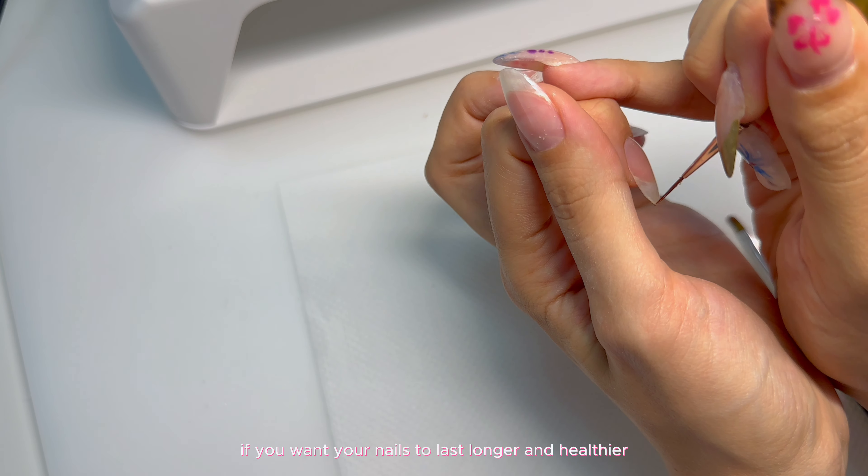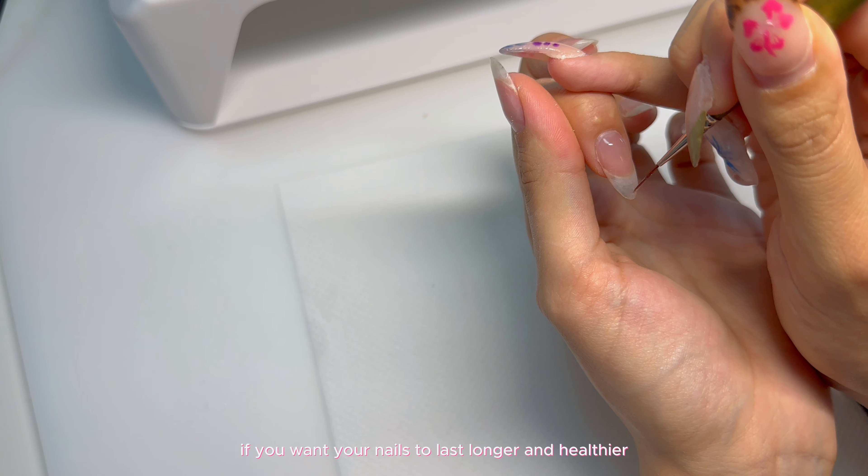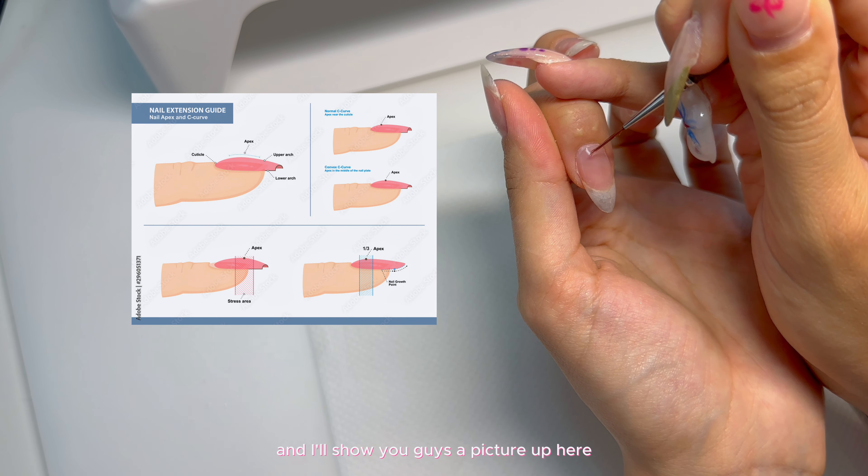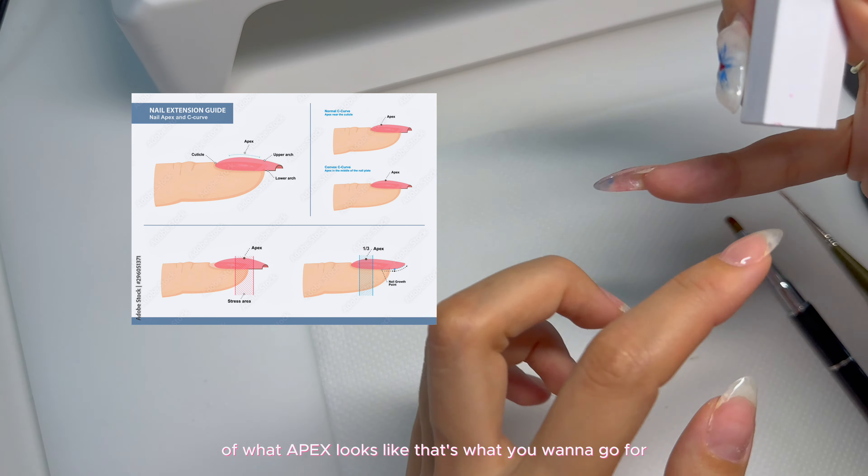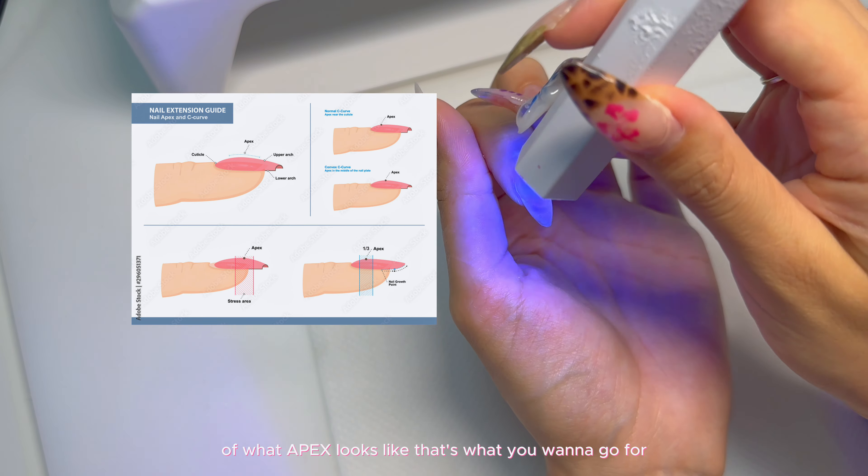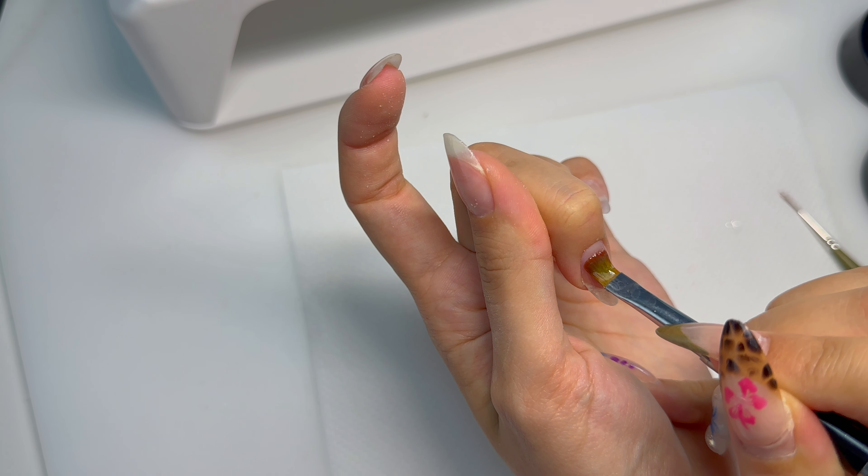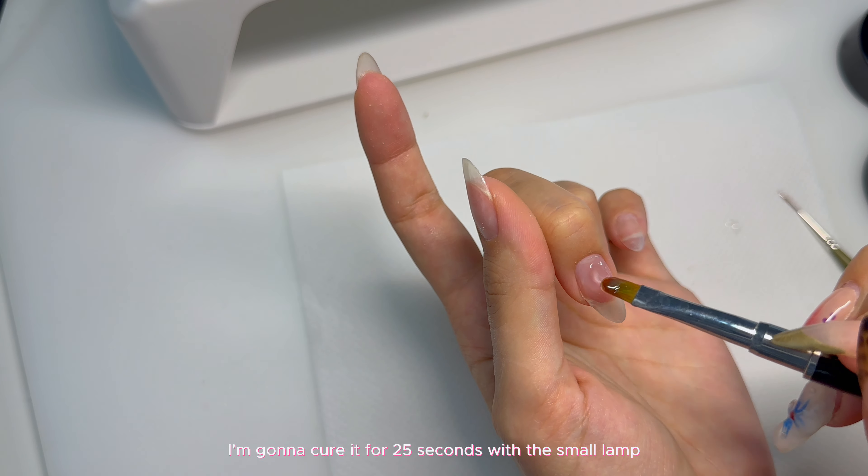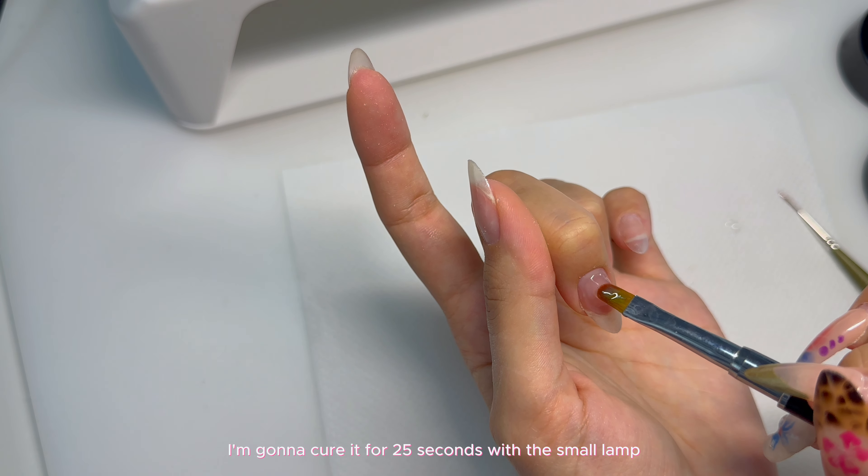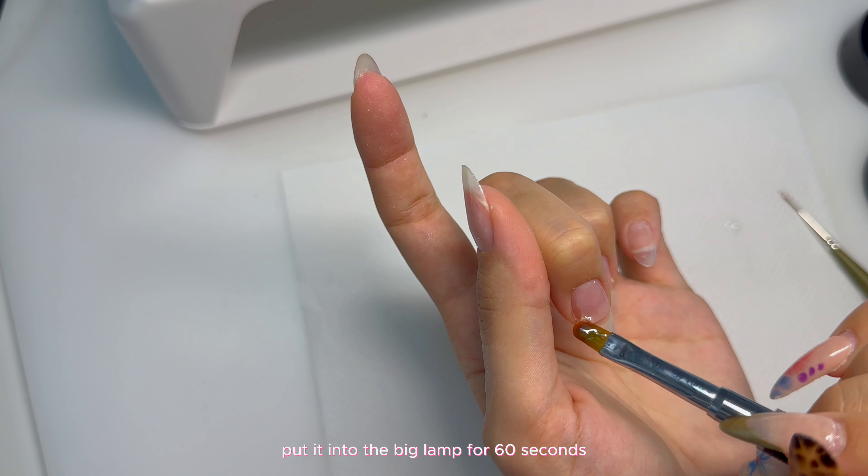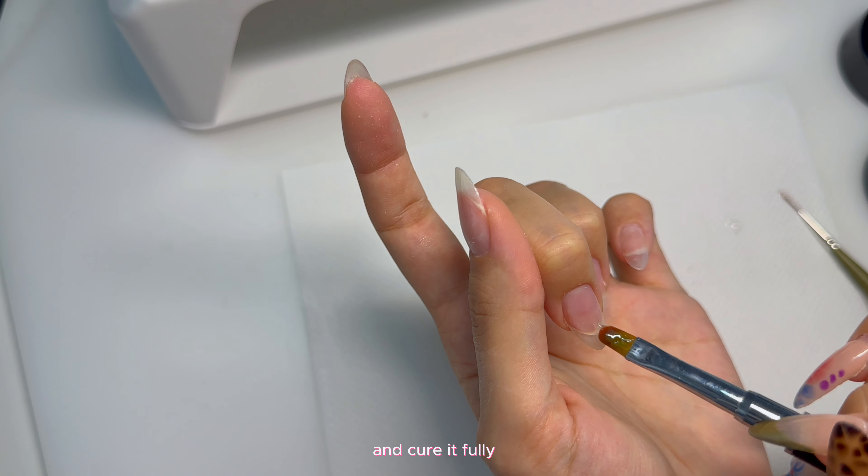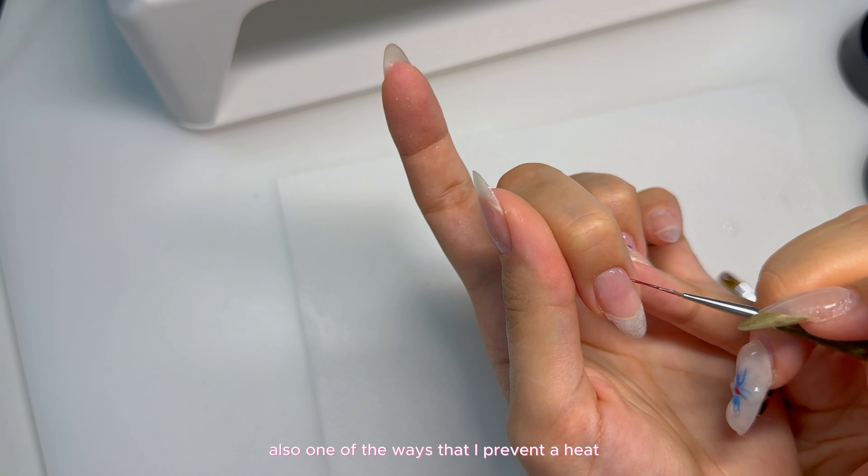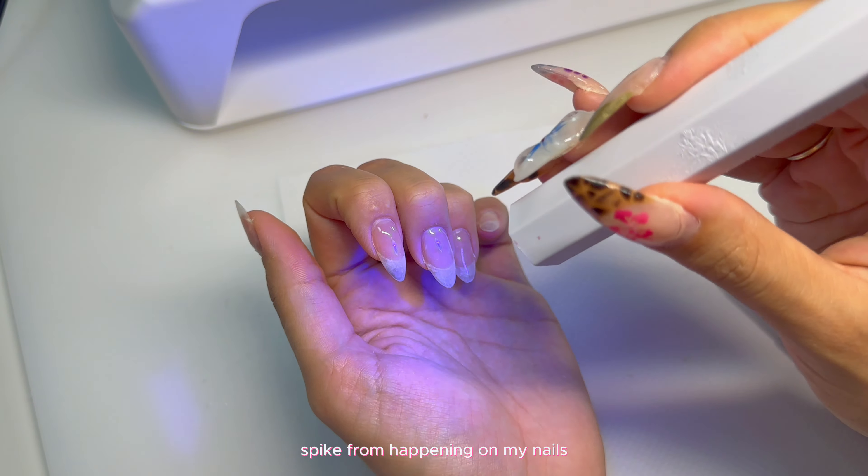I'm also grabbing a liner brush. I've said this time and time again on my channel, but you really want to build the apex when you're doing your nails. If you want your nails to last longer and healthier, you always want to build the apex. I'll show you guys a picture up here of what an apex looks like. That's what you want to go for. After I've applied the builder gel on each nail, I'm going to cure it for 25 seconds with the small lamp. And then at the end, put it into the big lamp for 60 seconds and cure it fully.